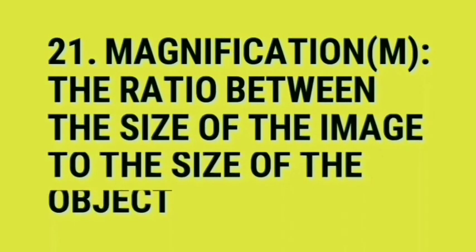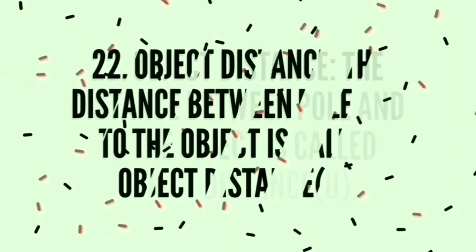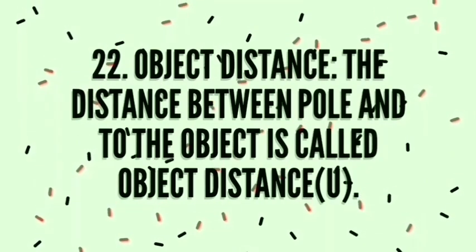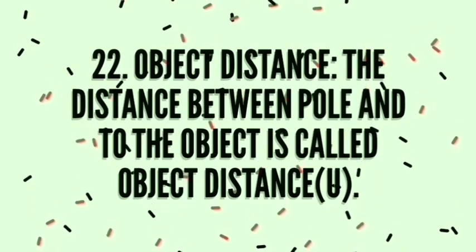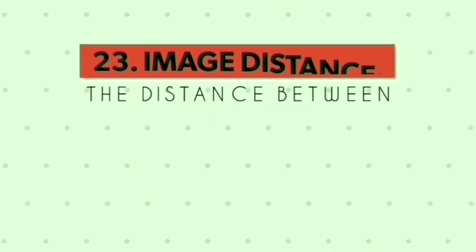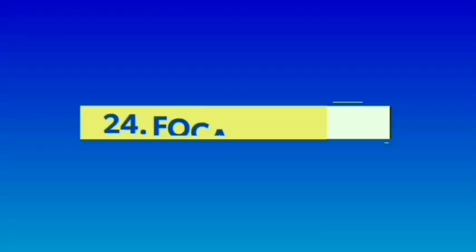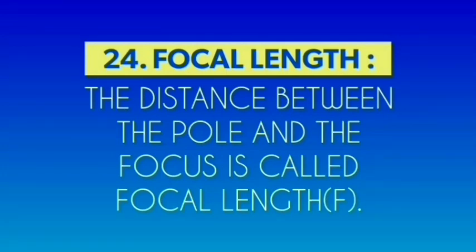The distance between pole and to the object is called object distance. The distance between the pole and to the image is called image distance. The distance between the pole and the focus is called focal length.